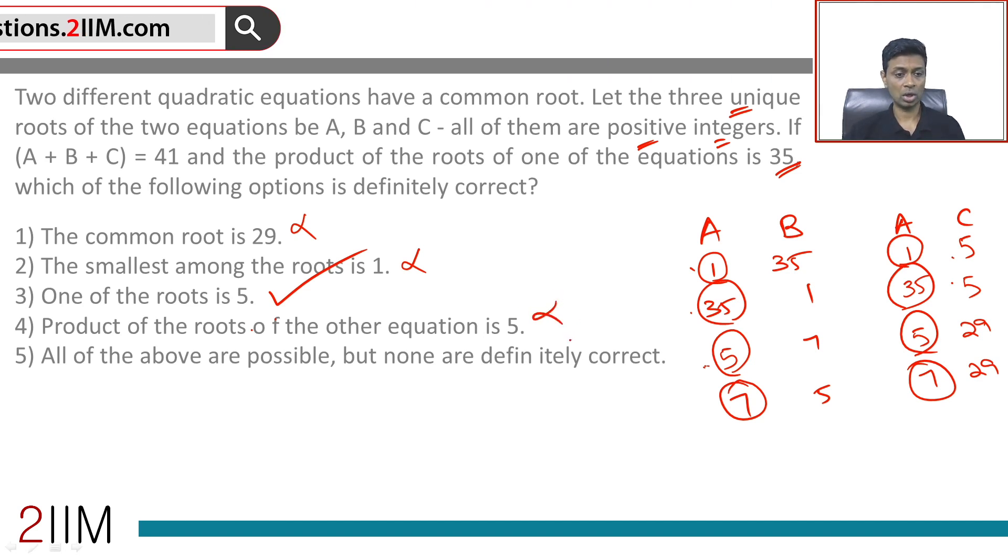All of the above are possible but none are definitely correct. This is not even possible. Wonderful question. Just step by step. This is a starting point because the positive integers product of two positive integers being 35 - it's a big giveaway. We can figure out the rest from there.